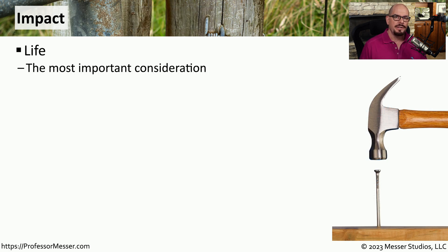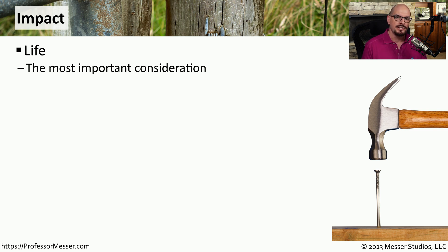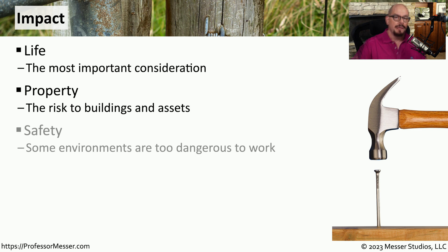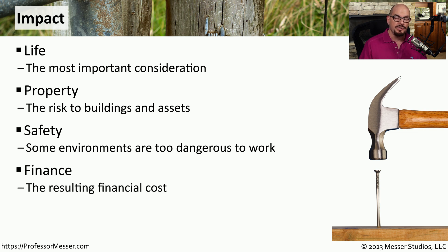We take into account a number of different impacts of events in our risk calculations. The most important of these would be life — we want to be sure that everyone in the organization is safe. We can replace assets, but we can't replace people, so we usually put life at the top of our concerns. We then also have to consider the impact to property, such as buildings and resources. We should also consider the impact of safety to individuals and the company, as well as the financial impact.